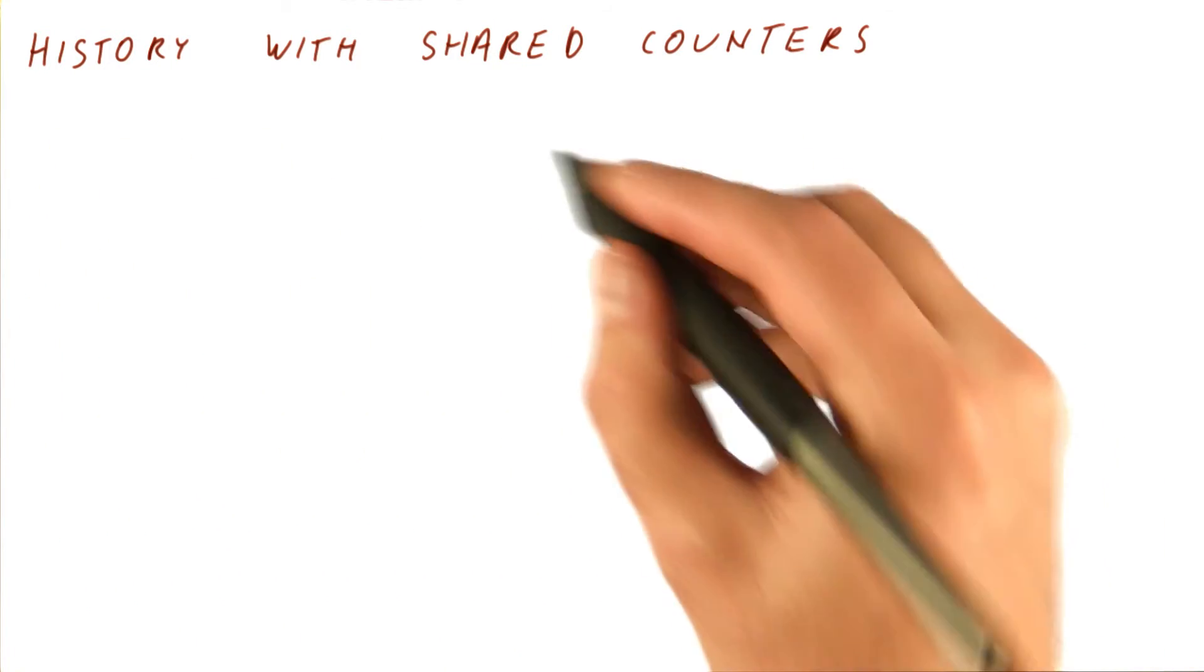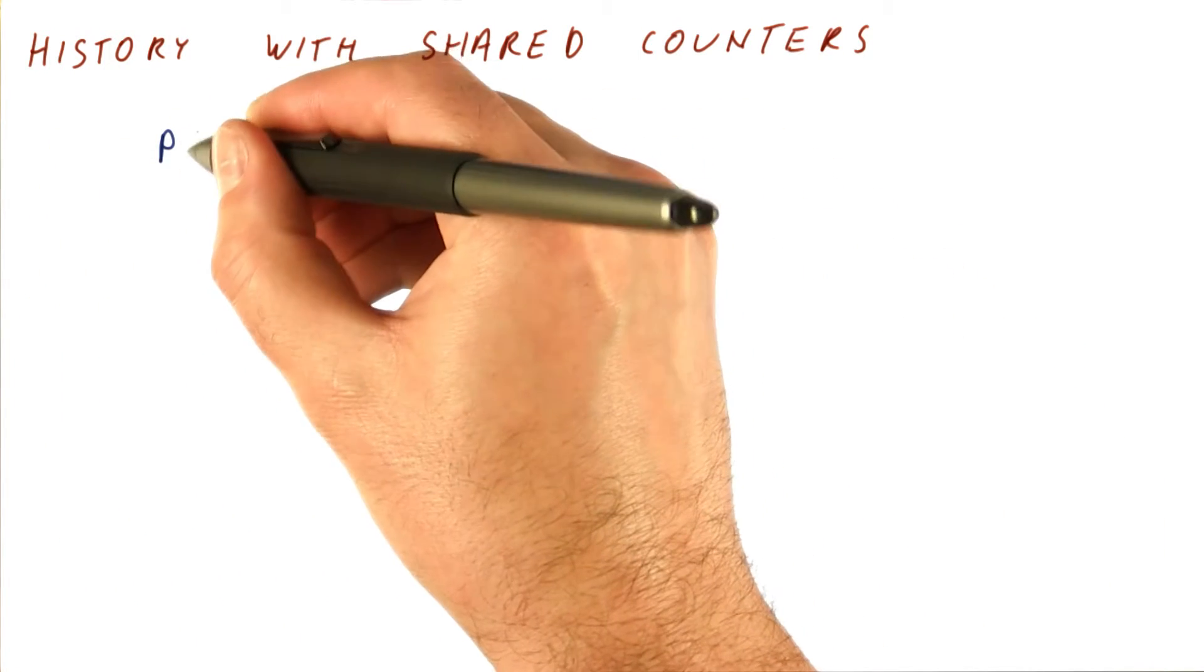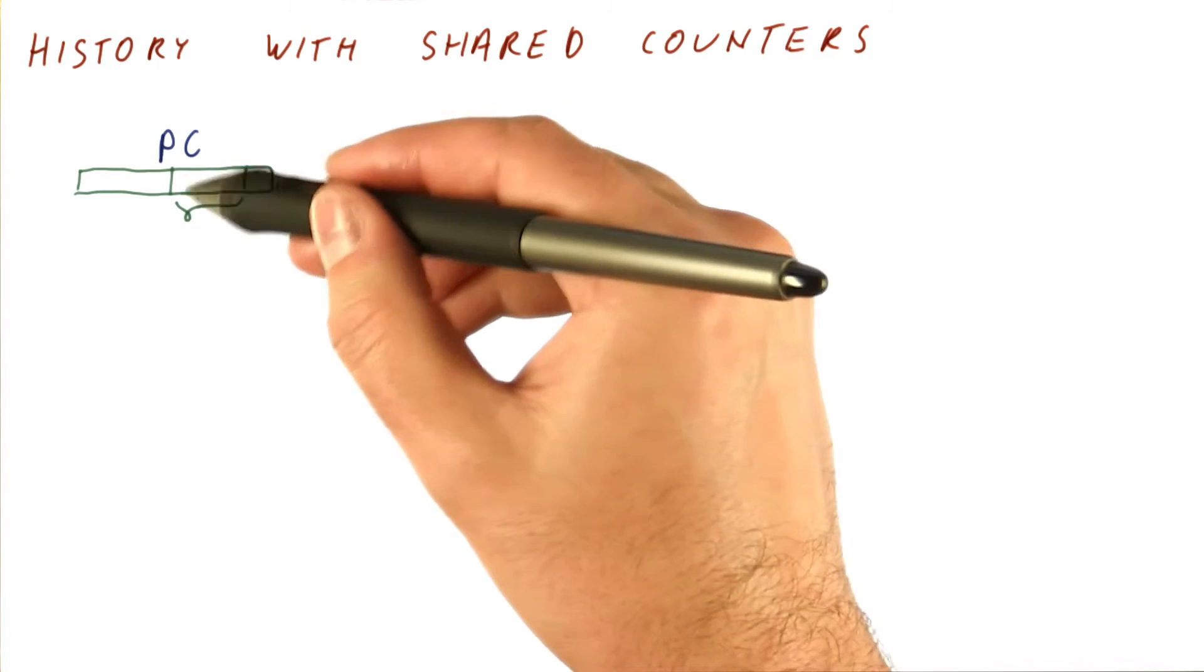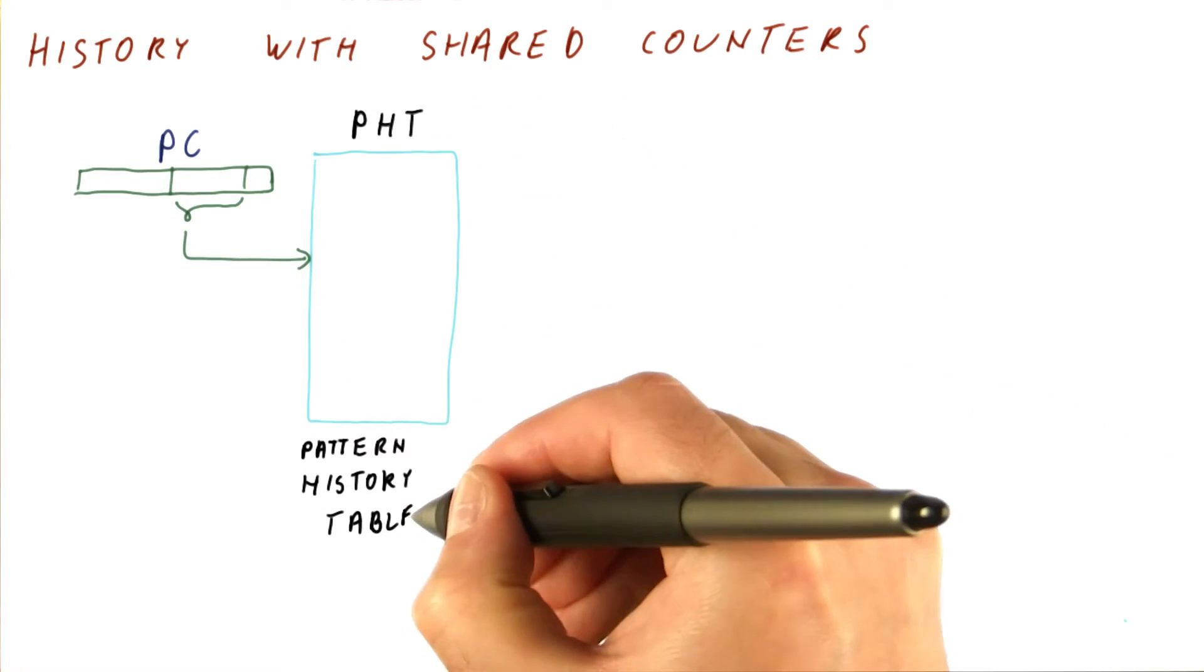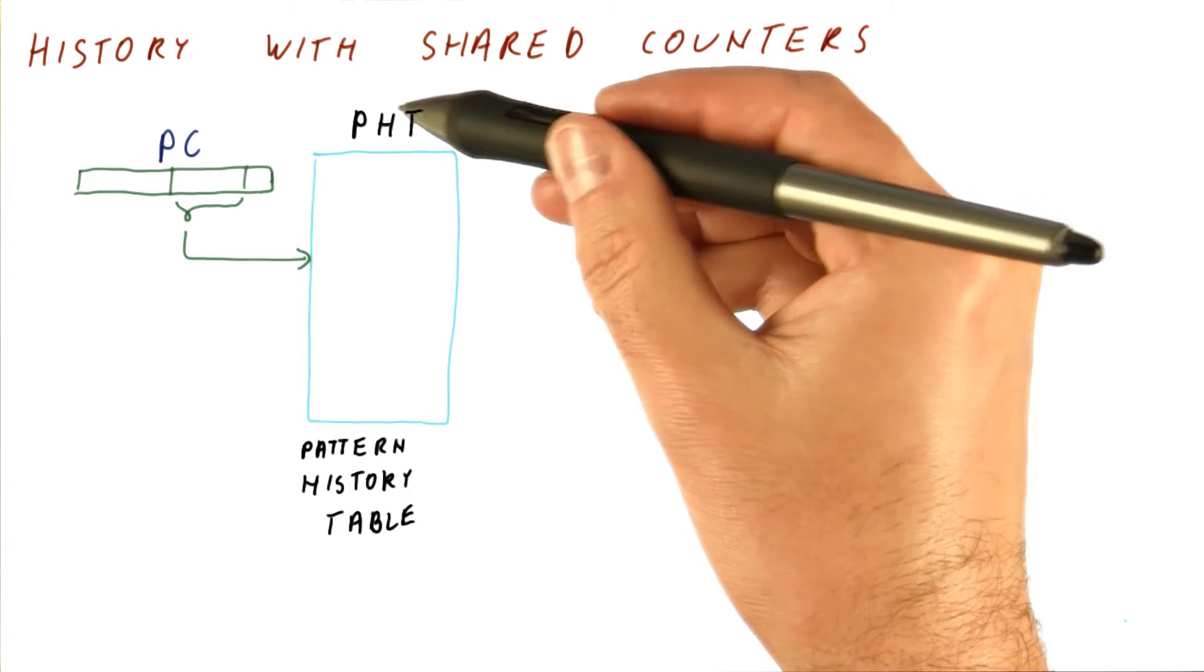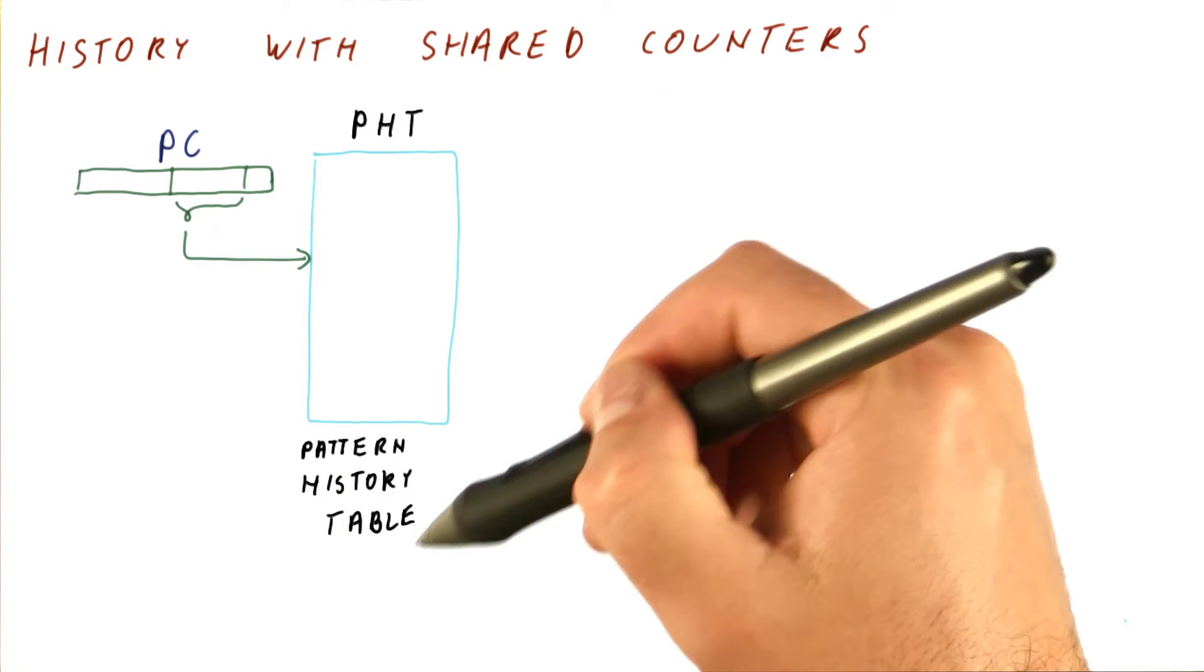So this is how our history with shared counters would work. We have the program counter. We take some of the lowermost bits, use that to index into what we will call PHT, or pattern history table.